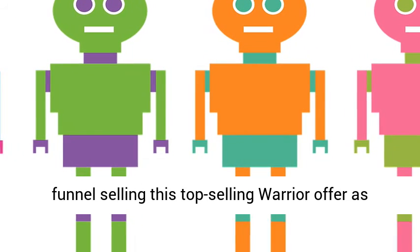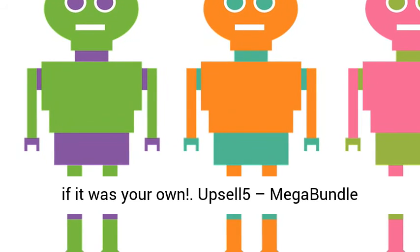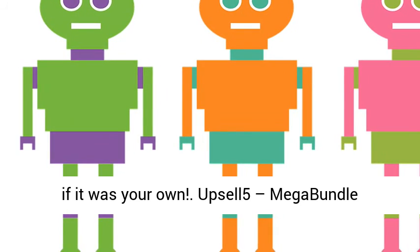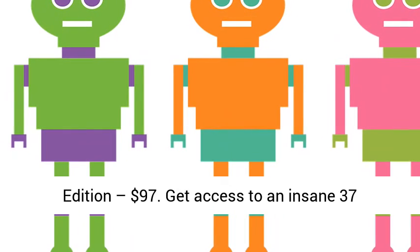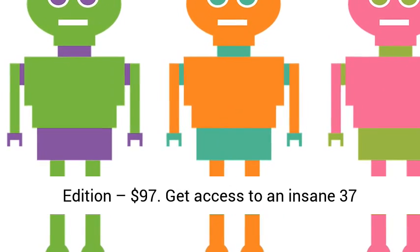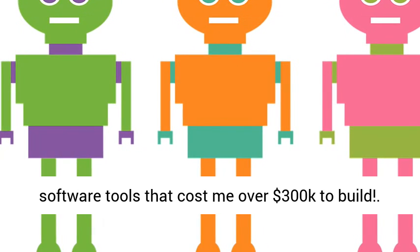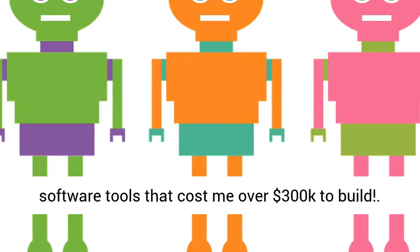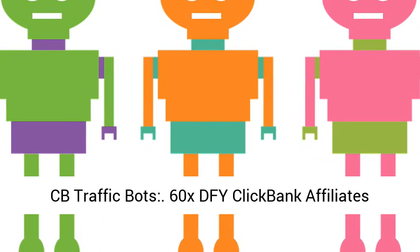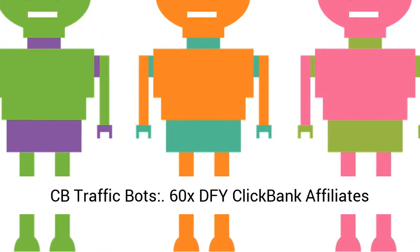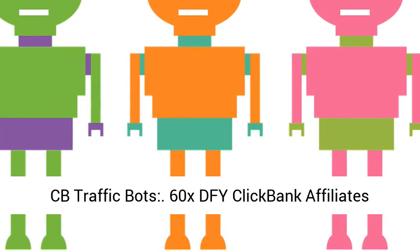Upsell 5 — Mega Bundle Edition, $97: Get access to an insane 37 software tools that cost over $300k to build. CB Traffic Bots — 60x Done-For-You ClickBank Affiliate Campaigns.